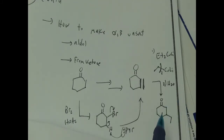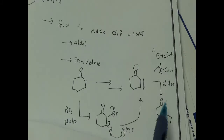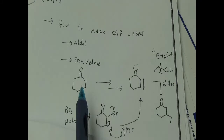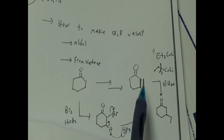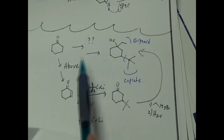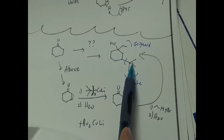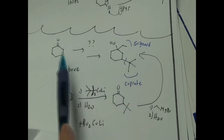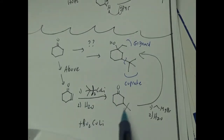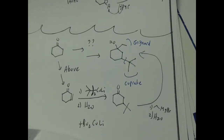The nice thing is that after the cuprate addition, if we wanted to, we could now do a Grignard addition to the ketone. Grignards attack ketones and attach a second R-group at the ketone position, making a tertiary alcohol. So a common sequence is: take a ketone, turn it into an enone, do a cuprate addition, and then do a Grignard addition. We did that as a potential synthesis problem — for example, using tributyl cuprate first, and then an ethyl Grignard to make the tertiary alcohol.